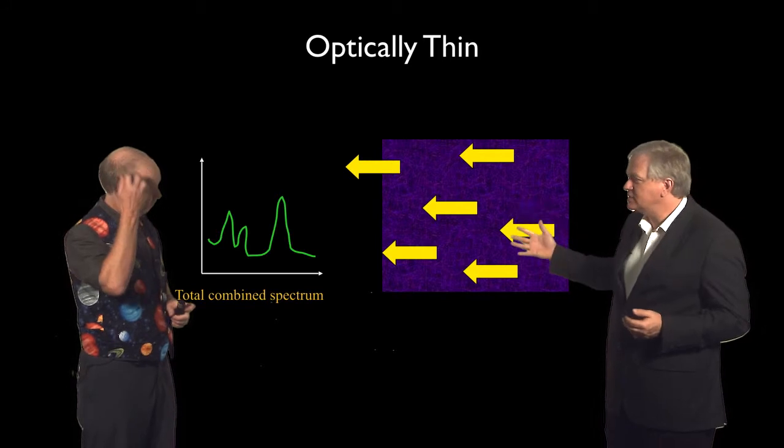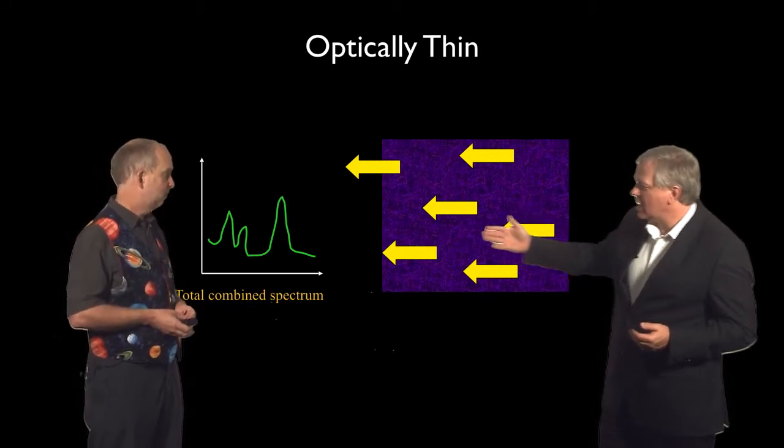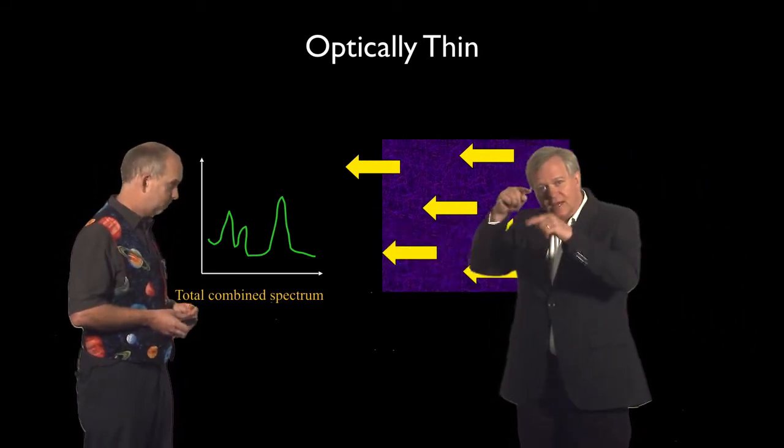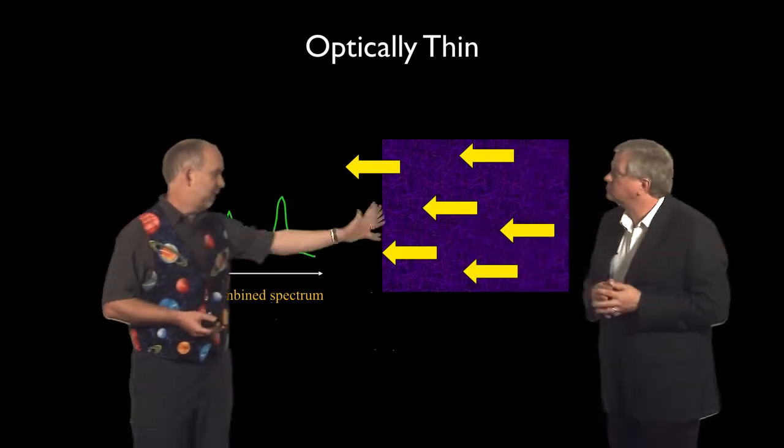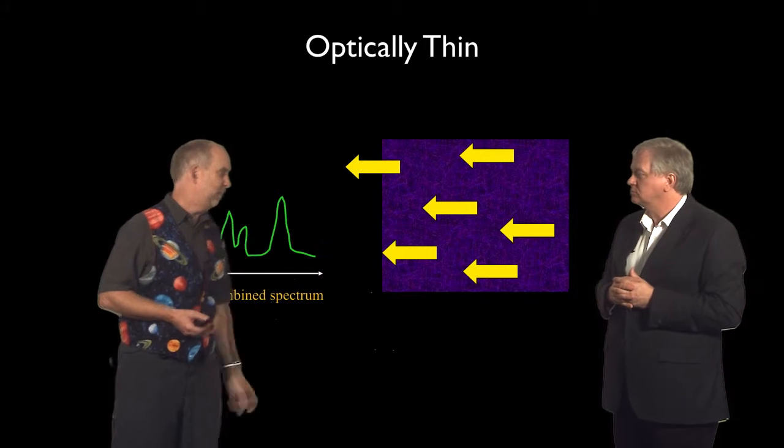So if you have a bunch of gas, you would expect to see emission at all of the energy levels that are excited within the atom. So how are you going to heat up gas or excite gas to bring the electrons up to high levels?